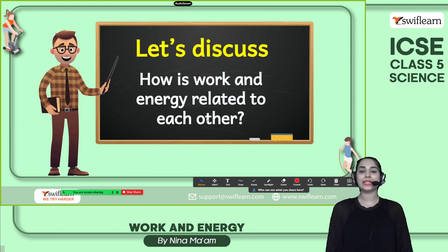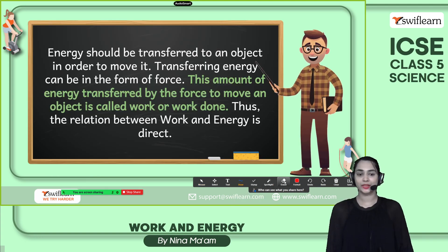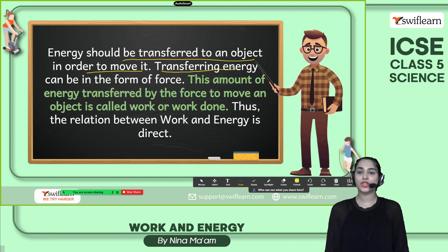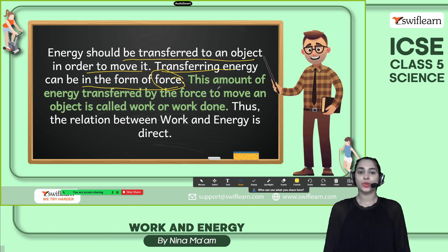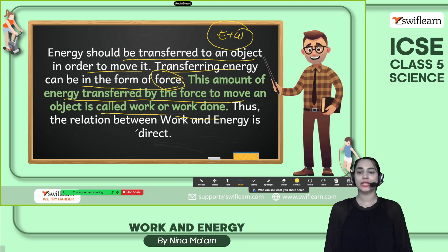Now let's discuss how work and energy are related to each other. Energy must be transferred to an object in order to move it, and this transfer can happen in the form of force. The amount of energy transferred by the force to move an object is called work or work done. So work and energy are directly related to each other.